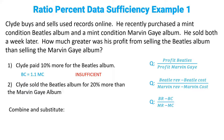Statement number two: Clyde sold the Beatles album for 20% more than the Marvin Gaye album. What does that mean in math? That means BR equals 1.2 MR. Is that going to be enough information to get all the variables to cancel off? No way, because statement two gives us a bunch of revenue information, but we've got nothing on cost.